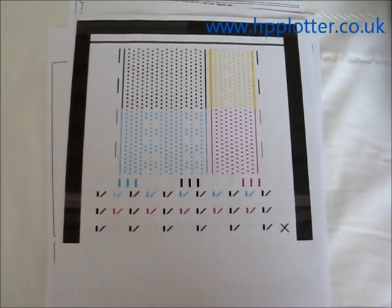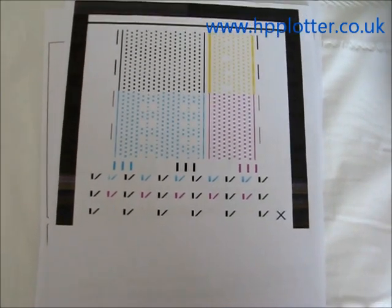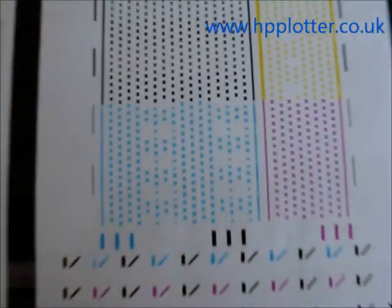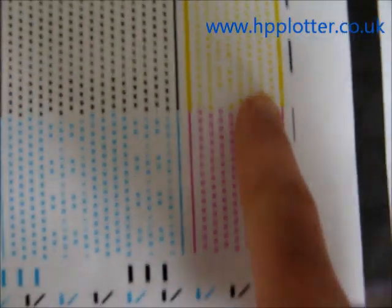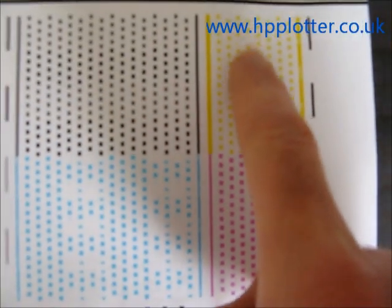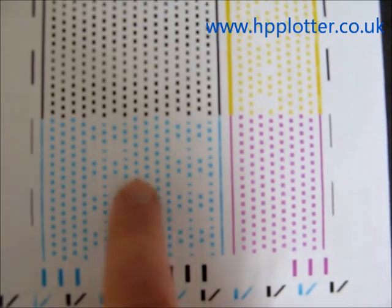So the DesignJet's finished running the print head alignment, and it's actually failed on this machine. If we have a look at the pattern there, what we can see is the yellow pattern has ink missing, as does the cyan.